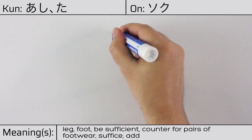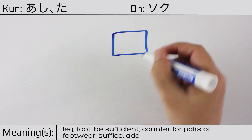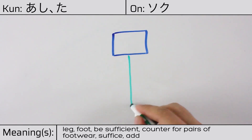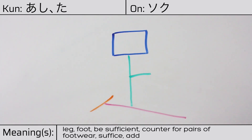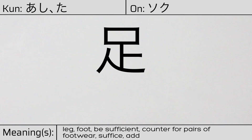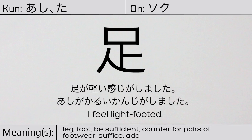This character is made up of the following radicals or parts: mouth or kuchi at the top, followed by the katakana to or oracle radical, katakana no, and then a downward sloping stroke. You can remember this kanji by thinking of it as a person running, with one foot in front and one foot behind. Our example sentence is: 足が軽い感じがしました — I feel right-footed.